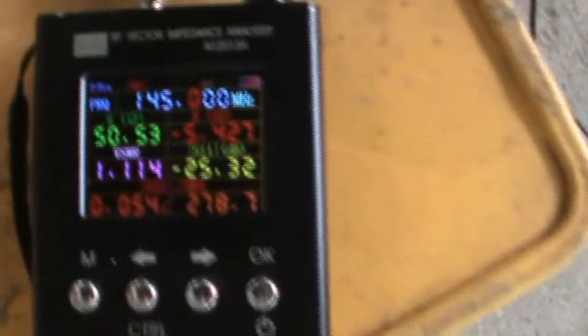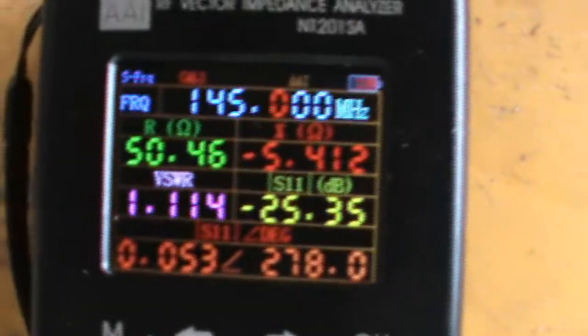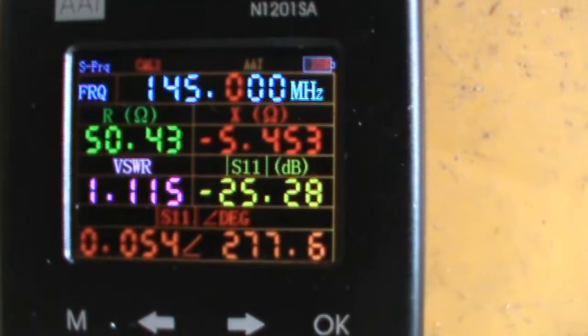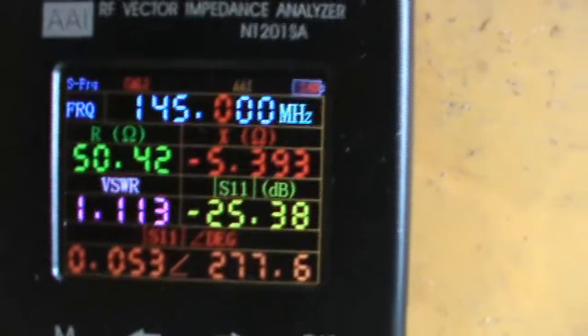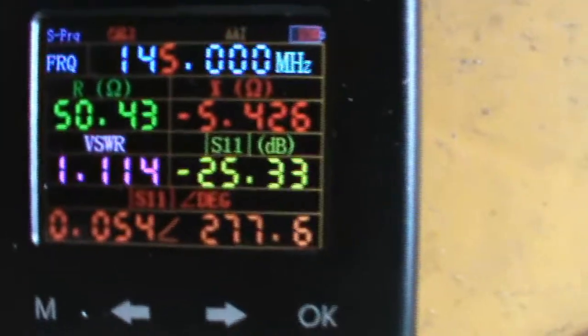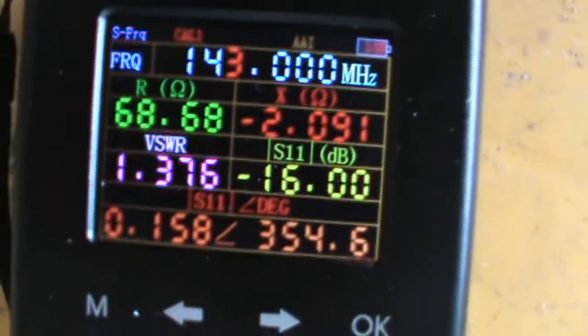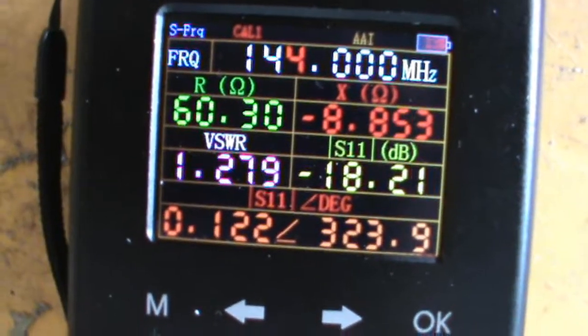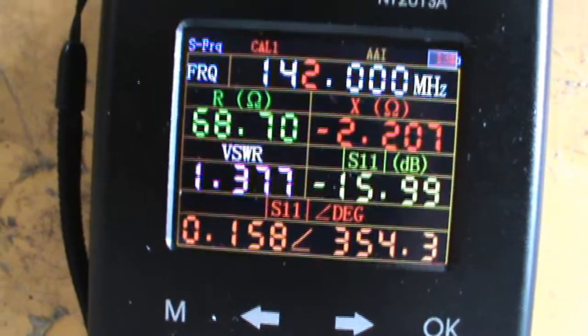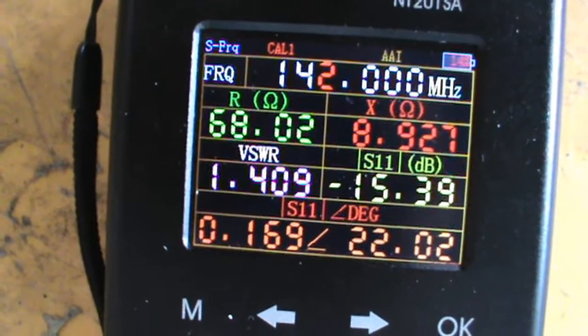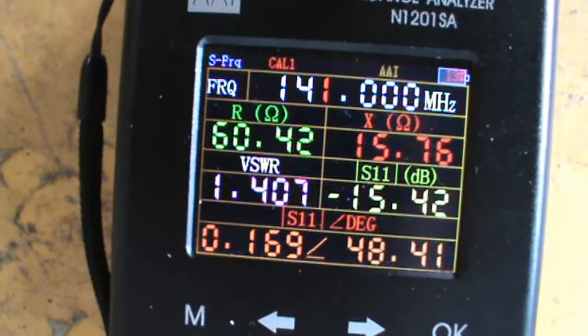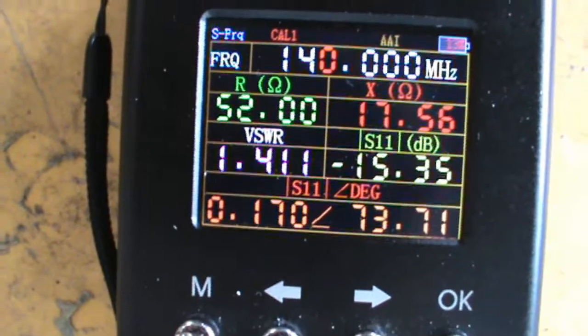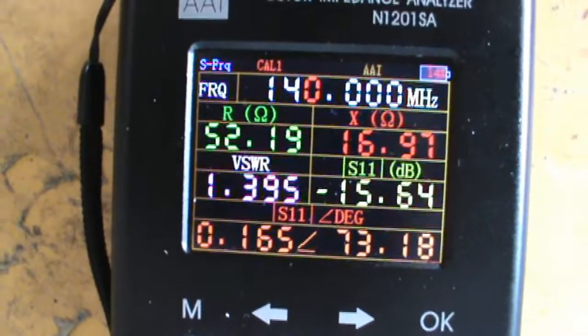This is now connected to my vector impedance analyzer. As we can see the individual frequency response on 145 is 1.1 SWR. Let's check the lower band: 144 is 1.2 or 1.3, 143 is 1.3, 142 is 1.4, 141 is 1.4, and 140 is 1.4.